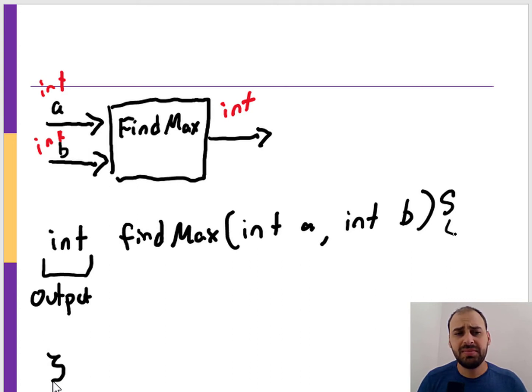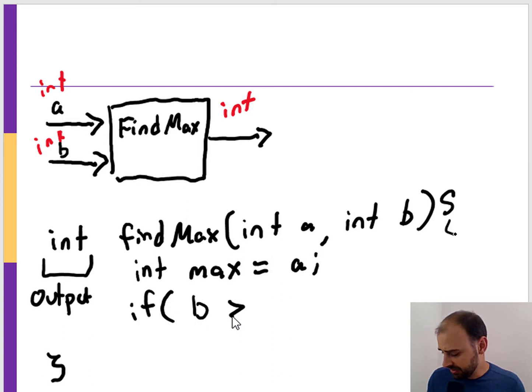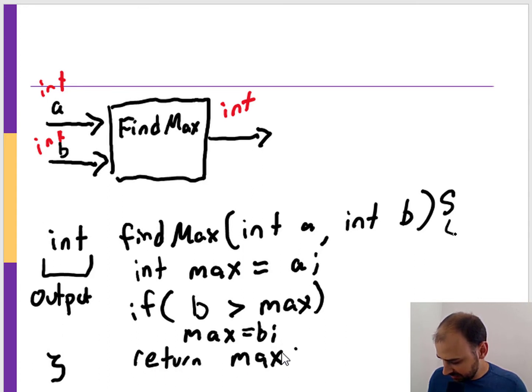Now the logic for this is going to be quite simple. You can write it a couple different ways, but we can have a variable called max, and we can just pick one of the values that we're going to assume is the largest. If we're wrong with that assumption - if b is larger than a or max, which is the same thing because they're the same value - we assume max is a, and if we're wrong, we're going to set it to b. Then we're going to return max.